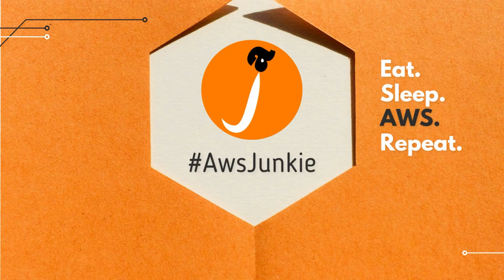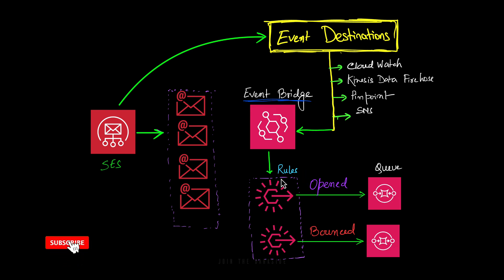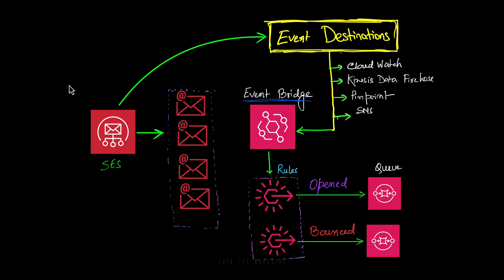Let's quickly check this feature in action. Before I start the demo, let me quickly share what we are going to build. We'll use Simple Email Service to send emails and publish email sending events to event destinations. In our case we'll use EventBridge, the new one, and in EventBridge you can define different rules such as opened or bounced, and forward those events to a target like a queue. For this demo I'll configure one rule which will listen to all email sending events and send those events to a queue. In the queue we'll poll those messages and see what we are getting there. Let's jump into the AWS console.